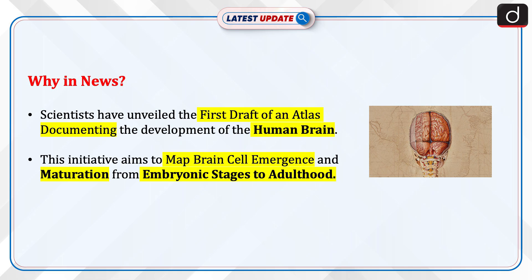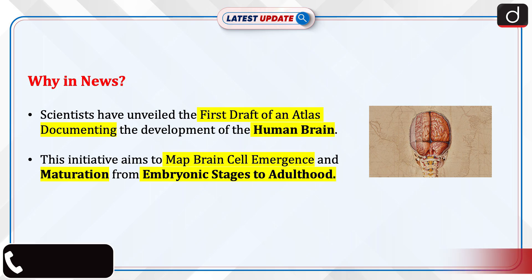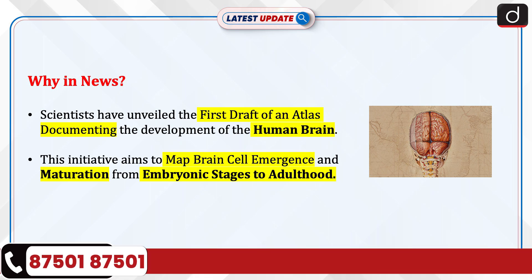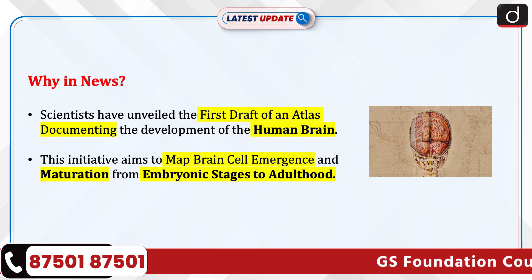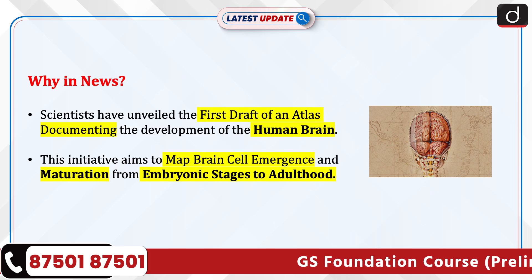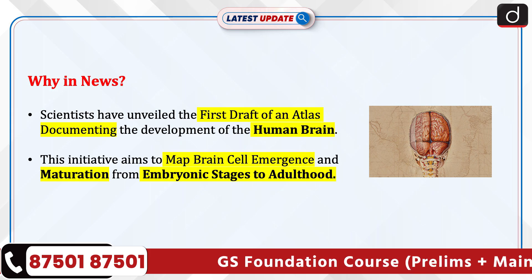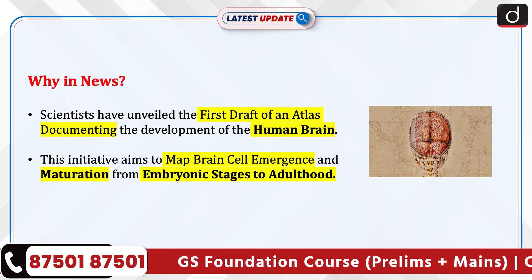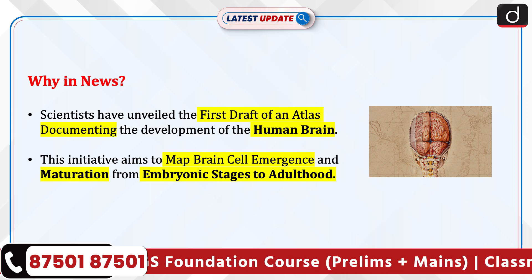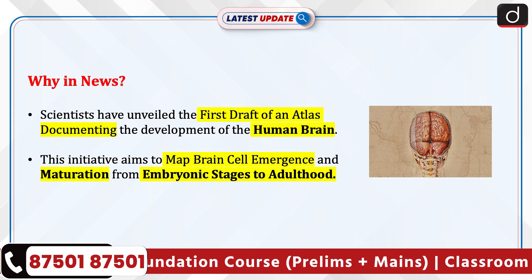While this is in news, scientists have unveiled the first draft of an atlas documenting the development of the human brain. This initiative aims to map brain cell emergence and maturation from embryonic stages to adulthood.